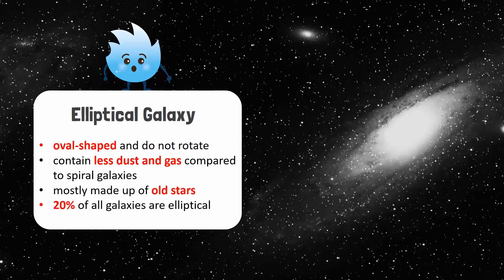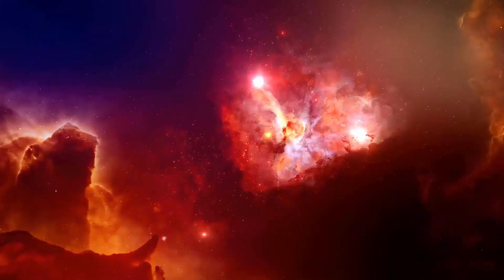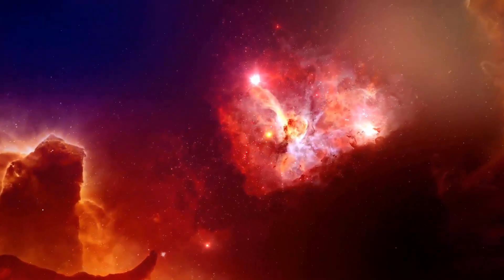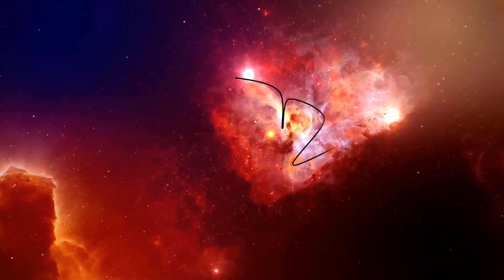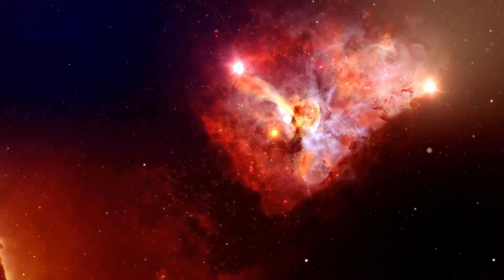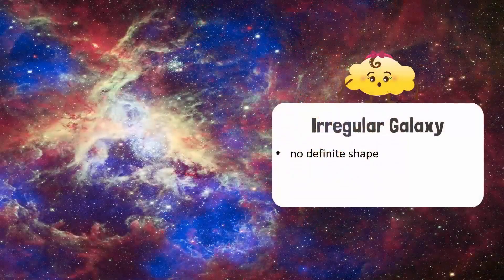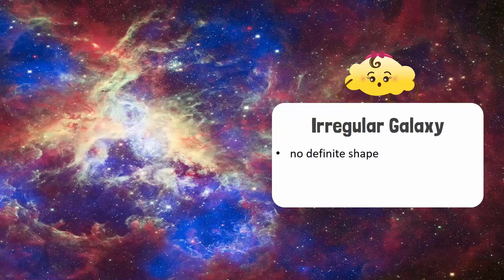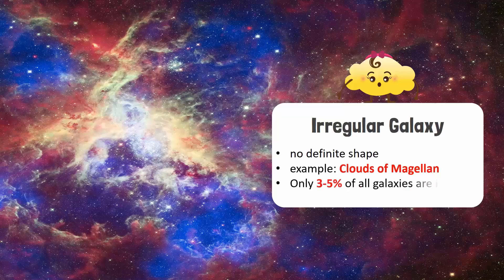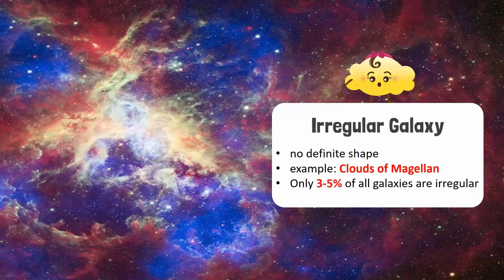Now this is an irregular galaxy. As the name suggests, irregular galaxies don't have a definite shape. The stars in an irregular galaxy do not appear to be grouped in any particular shape. The clouds of Magellan are irregular galaxies. Only three to five percent of all galaxies are irregular.